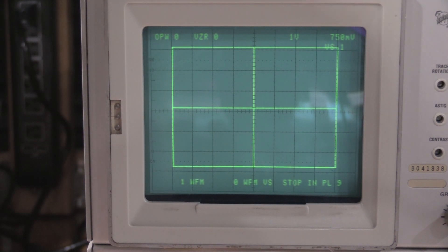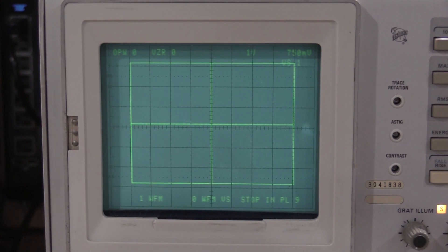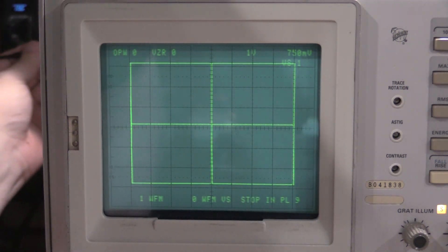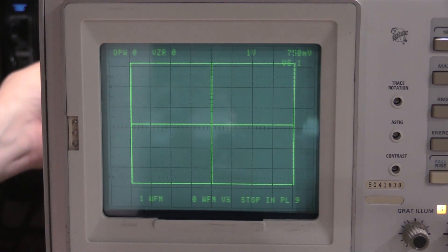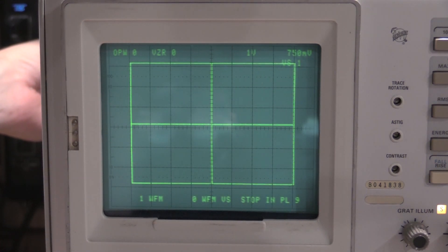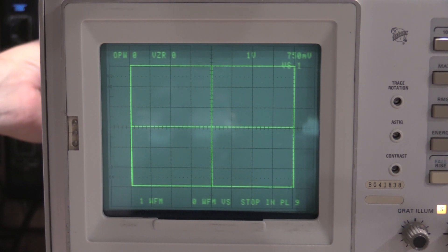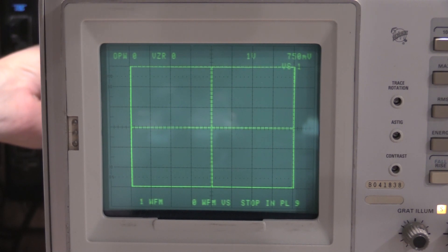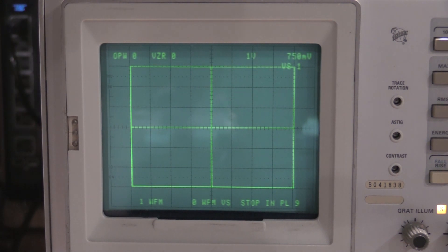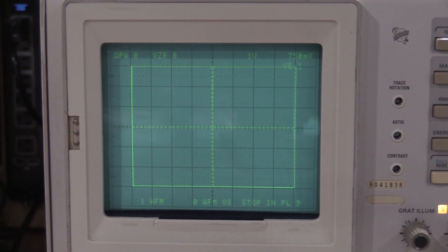Wait a second, that was the wrong pot. 65, not 99. That was RO waveform gain. RO waveform center is high and to the back left of the board. Here it is right here. There we go.